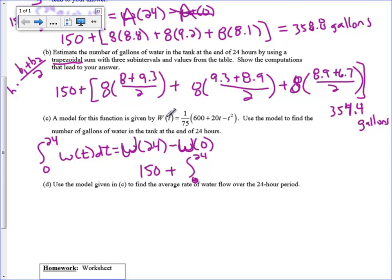So our answer is going to be 150 by adding W of 0 to both sides, plus the integral from 0 to 24 of this function they're giving us to model the situation, to model how much water is going into the tank. So they told me it was W of T, so I'm just going to write it as W of T dt. And so that's what I'm going to do on my calculator. And I did that on my calculator. And the answer that I got was 357.36. So apparently it's a pretty good model. It was close to my midpoint and my trapezoidal sum.